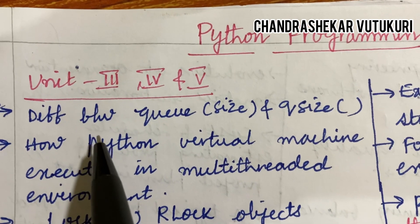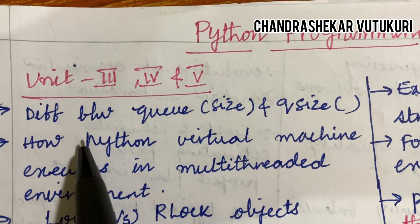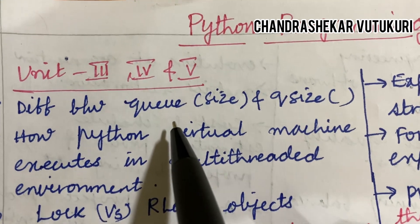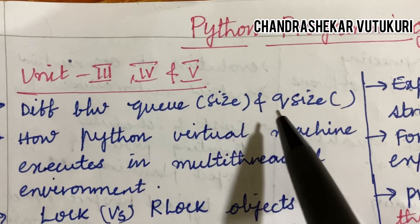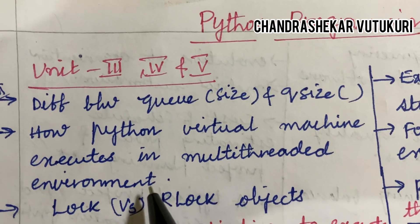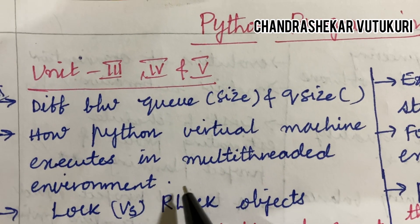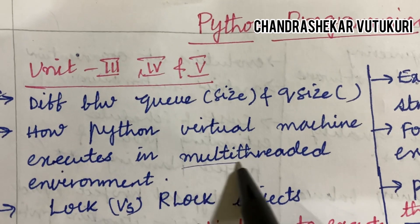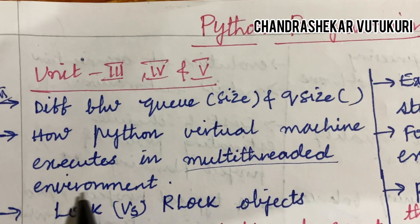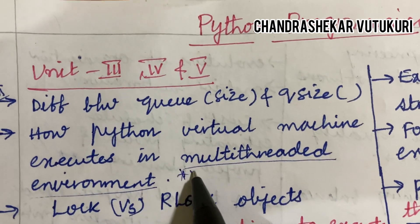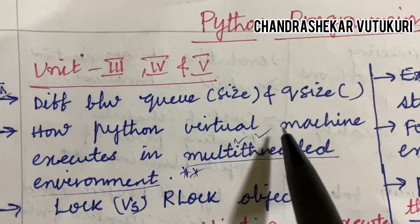From the third unit, you are going to get questions such as the difference between queue size and queue size. How Python virtual machine executes in a multi-thread environment — you are going to get a gunshot question related to this.